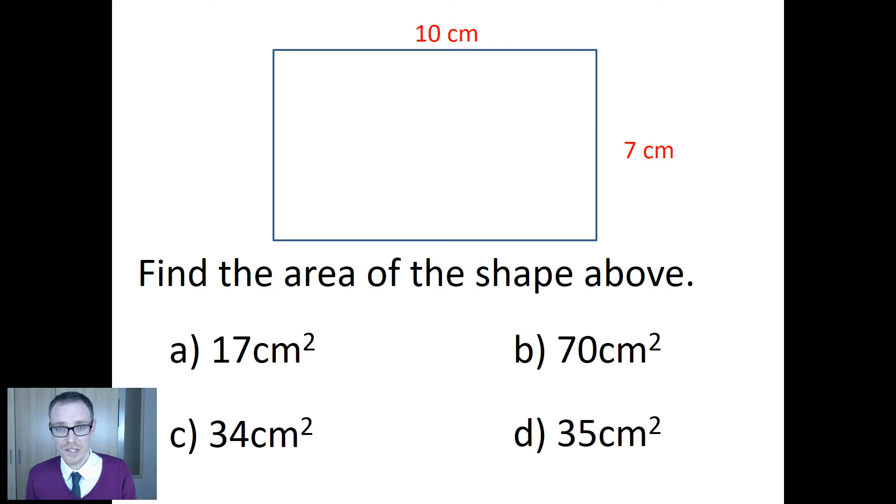But can you see what specific misconception each of the three alternative answers reveals? So if a child answered A, 17 centimeters, what would that tell you about their understanding? Well it would tell me that they think to get area they simply add the two numbers together instead of multiply. Quite a major misconception.